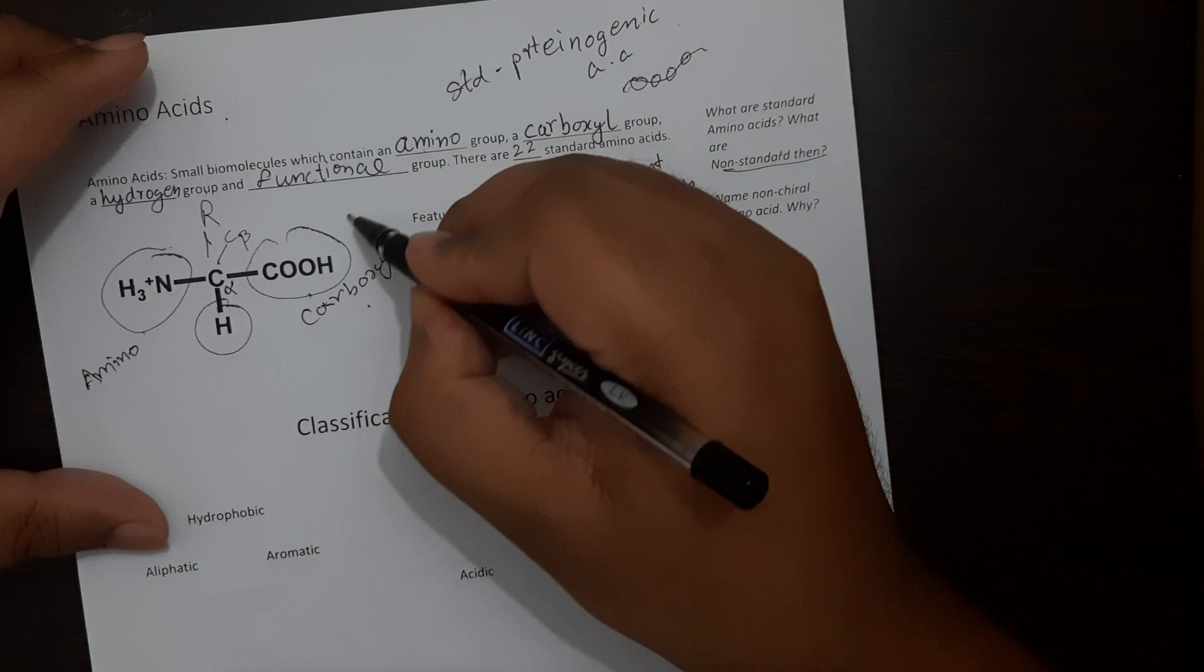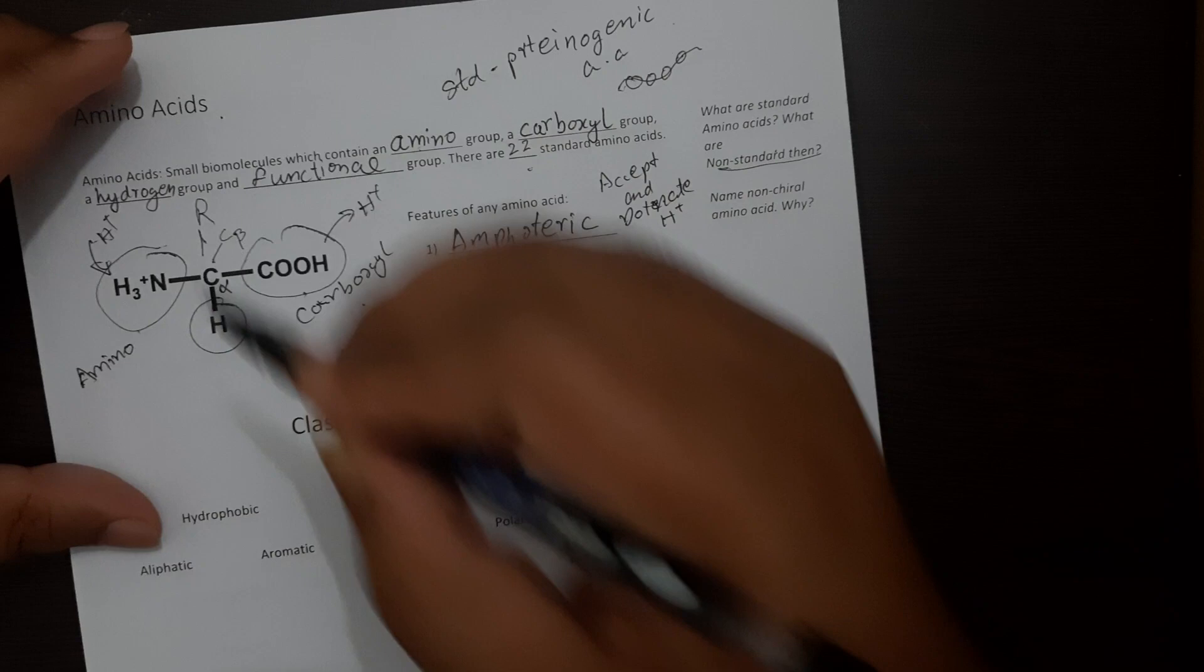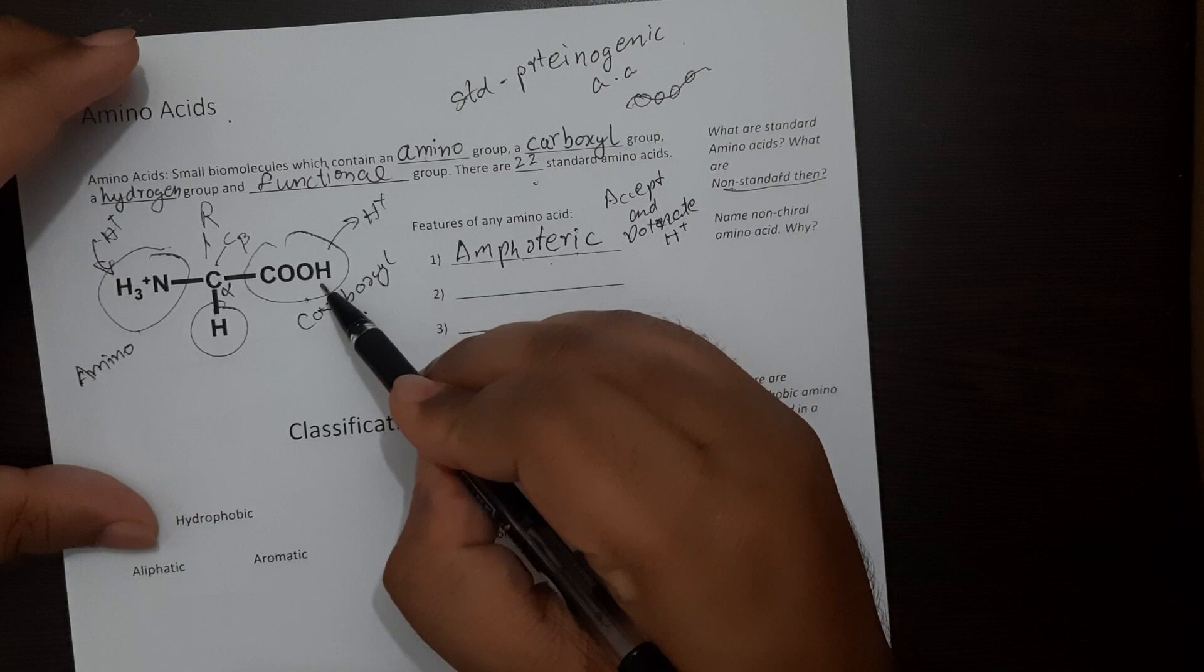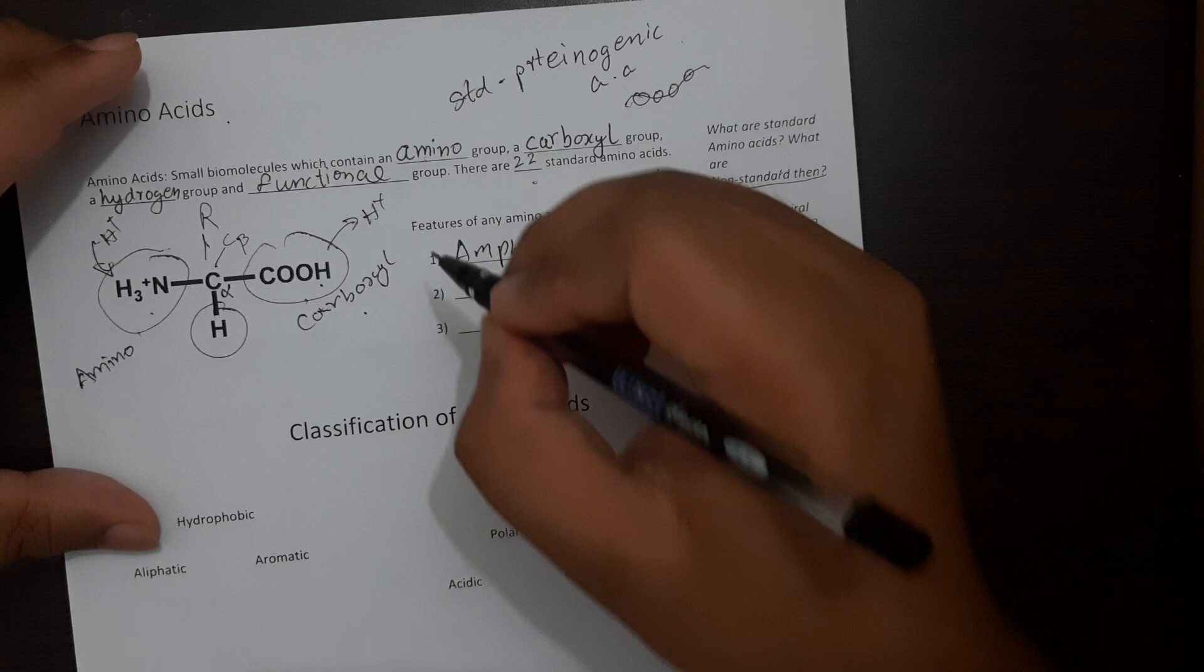So the carboxyl group can donate a hydrogen atom whereas the amino group can accept a hydrogen atom. That's the reason it's amphoteric in nature meaning it has both an acidic and a basic group attached to it.